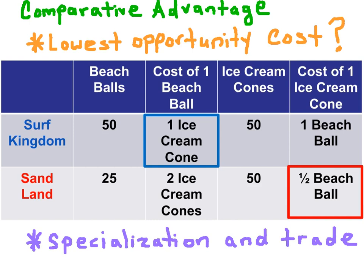For the opportunity cost of ice cream, we reverse the fraction. So now we have 50 beach balls in Surf Kingdom divided by 50 units of ice cream, giving us an opportunity cost of one beach ball. In Sandland, we take 25 beach balls divided by 50 ice cream cones for an opportunity cost of half a beach ball. Sandland has the lower opportunity cost in ice cream production, so they have the Comparative Advantage.